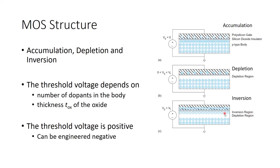Just below the oxide interface is called the inversion layer. It is called inversion because the channel or this region has been inverted from positive charge carriers to negative charge carriers. So there are three operating conditions: Vg less than zero volts, Vg between zero volts and threshold voltage Vt, and Vg greater than threshold voltage Vt.